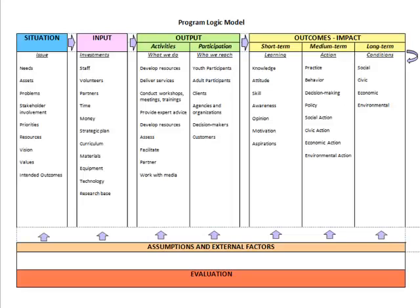A logic model includes several key components. The situation should highlight the issue being considered for programming. Inputs include the investments needed to accomplish the program. Outputs of the program are the activities that will be done and participation that will occur in the program. Outcomes and impacts are considered to be short-term, medium-term, or long-term. Short-term outcomes are the learning you expect your participants to gain. Medium-term outcomes are the actions that should occur.